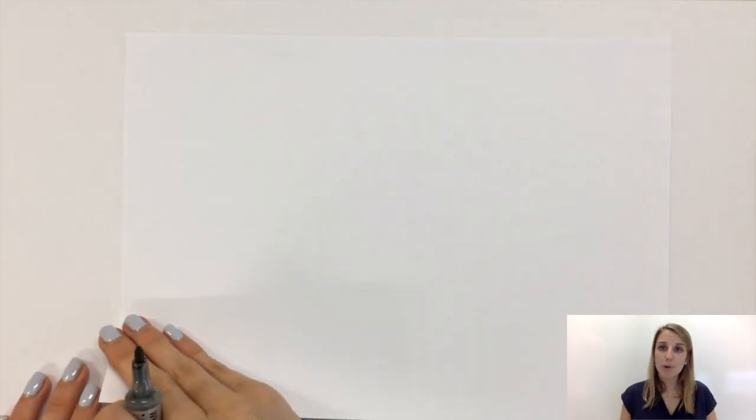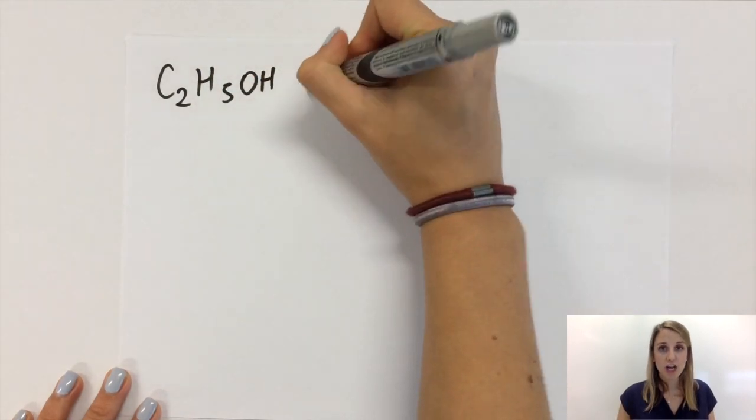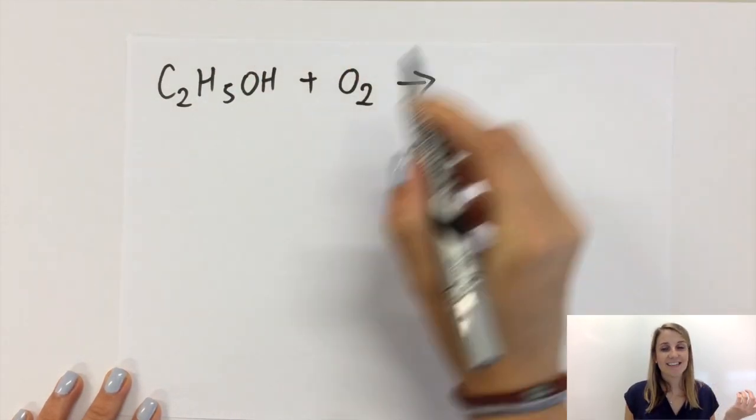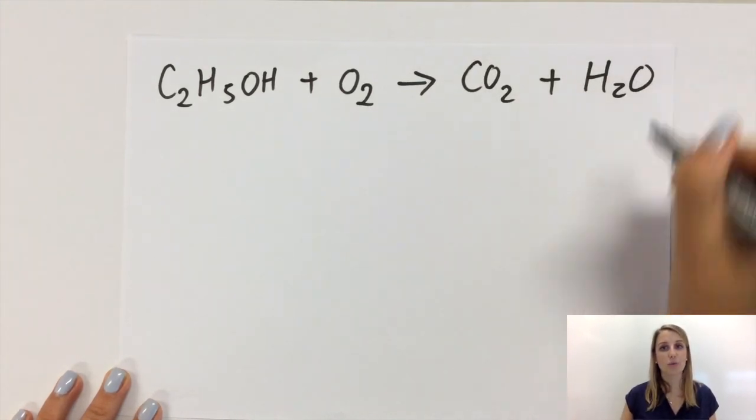If for example we burnt ethanol, that's C2H5OH, filling in the rest of the equation it's going to burn in oxygen to make CO2 and water.